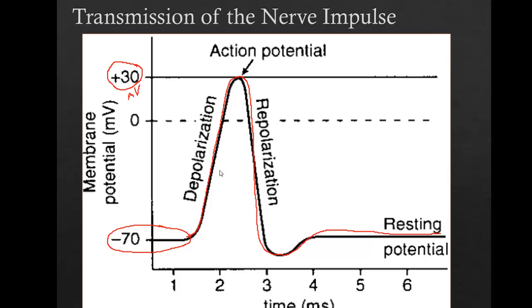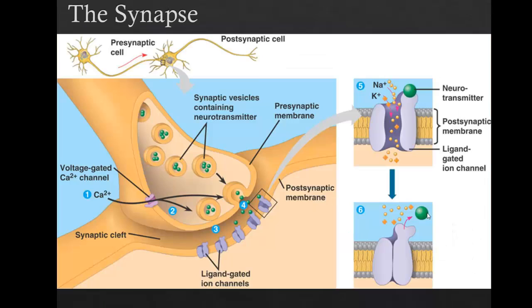Then the neuron will repolarize and go back to its resting potential. This happens in fractions of a second — very, very quickly. So at any moment the neuron will become depolarized, produce some small amount of volts, and then go back to its resting potential.